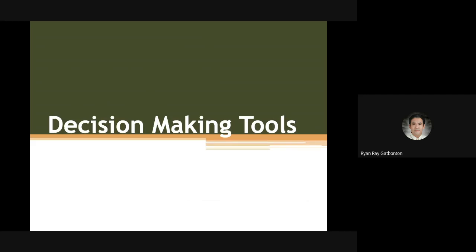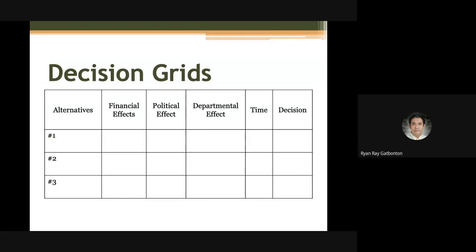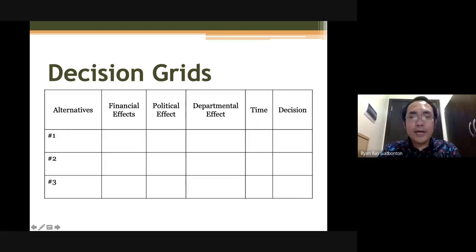Here are some decision-making tools. One is your decision grid, where you try to enumerate all alternative solutions for a certain problem, determine the financial effect of it, analyze the political effect — meaning how it can be implemented organization-wide — the departmental effect on the particular department implementing your decision, and the time needed for implementation.